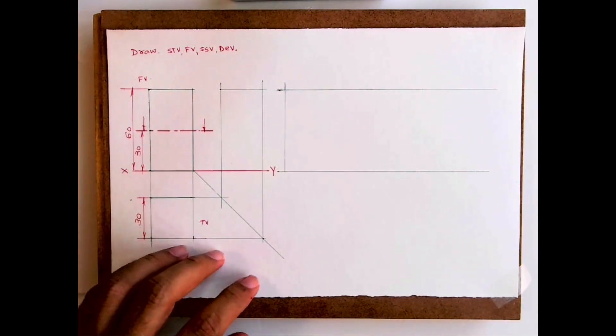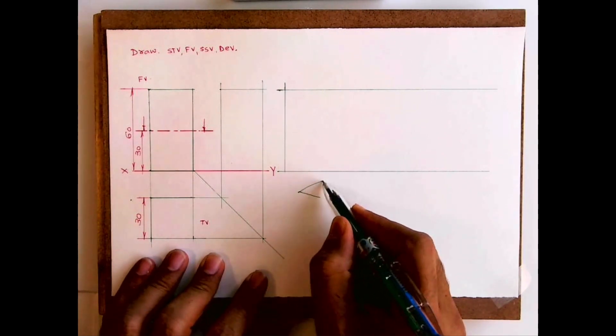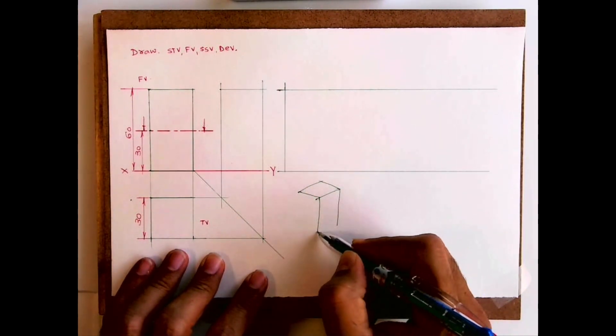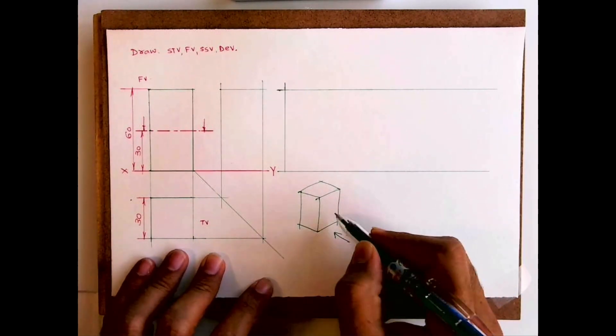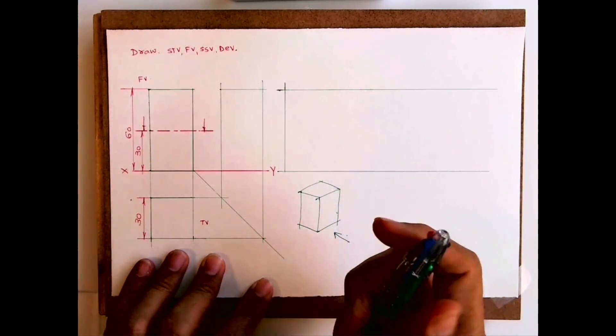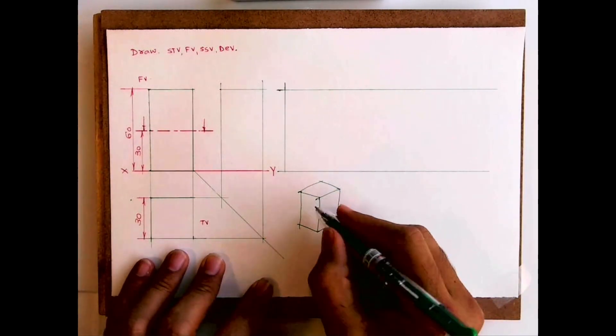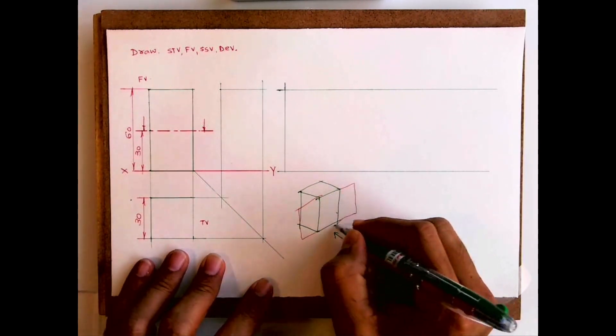Now this is square prism. When you open this square prism, how it will look? Let's assume that if I open it, let's consider all these are openable flaps. See, this part, when you open it, it will be like this, the other part, and one more part.